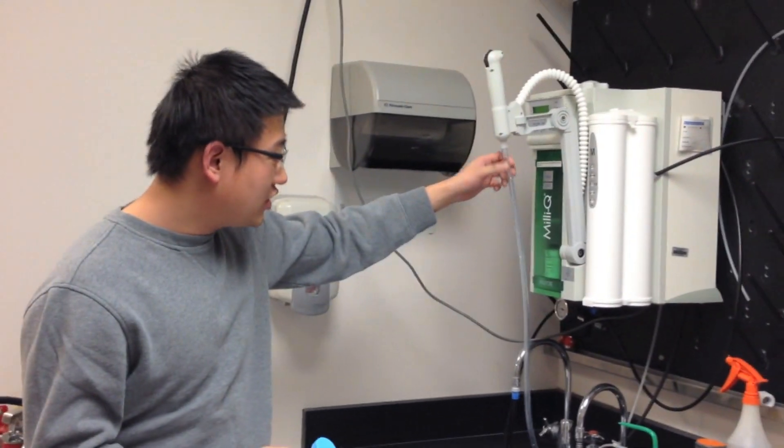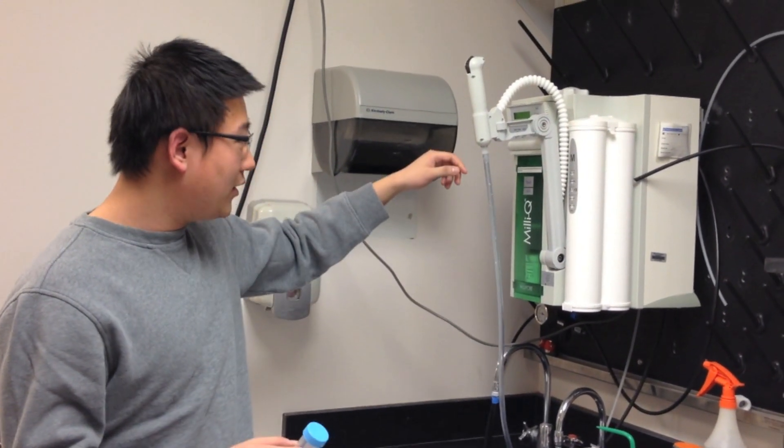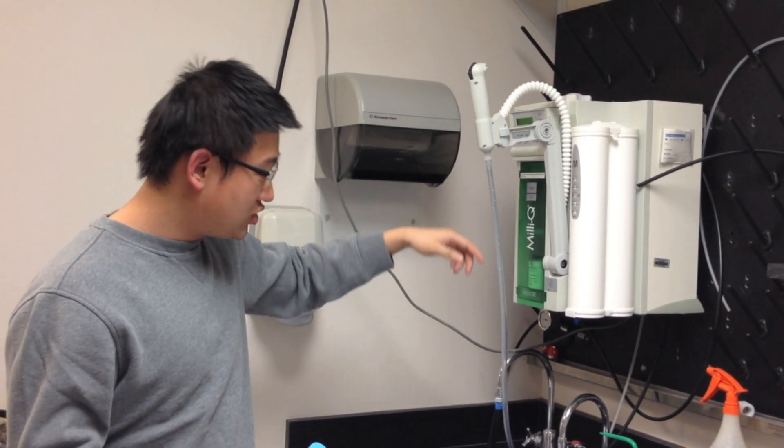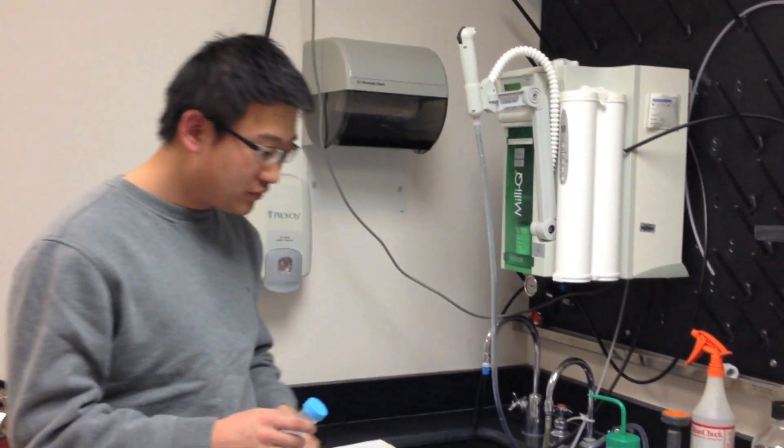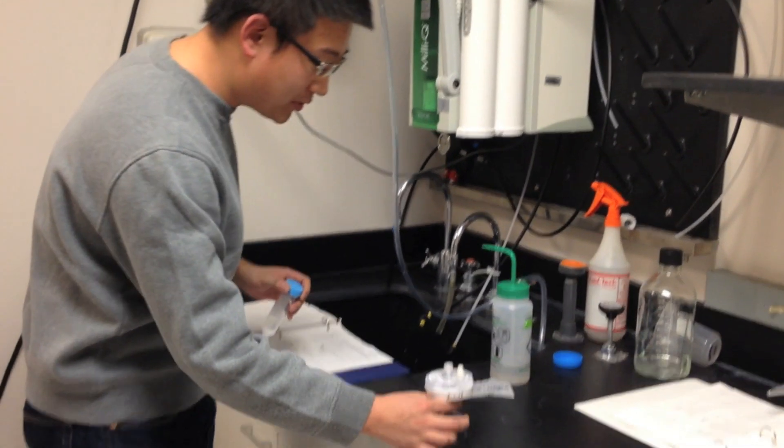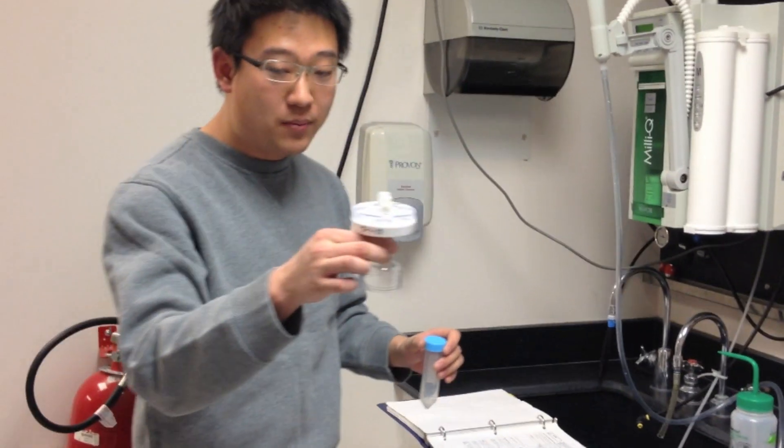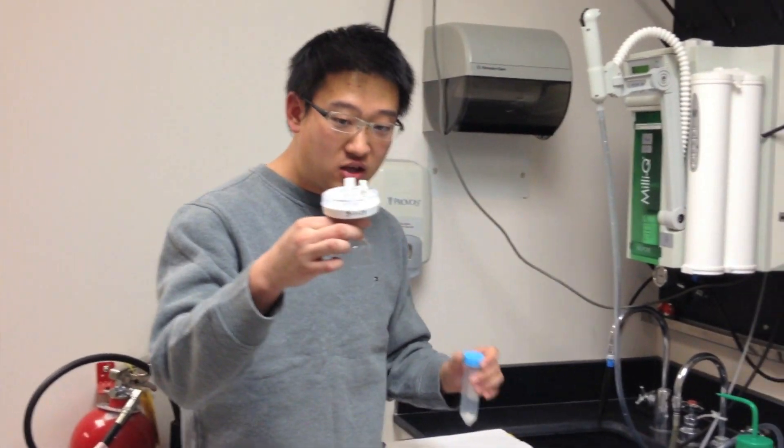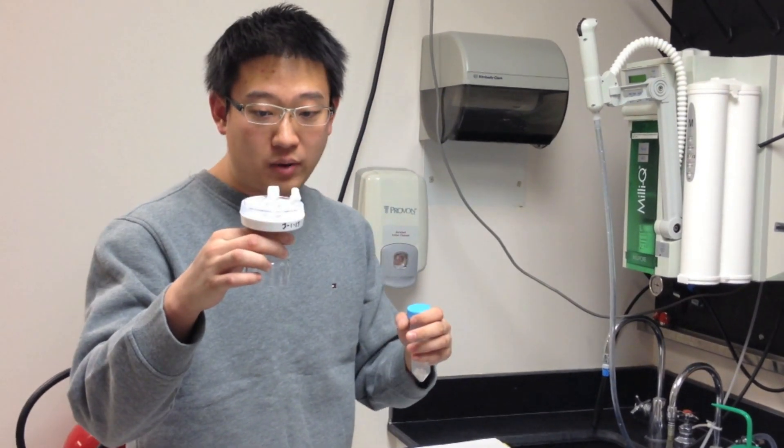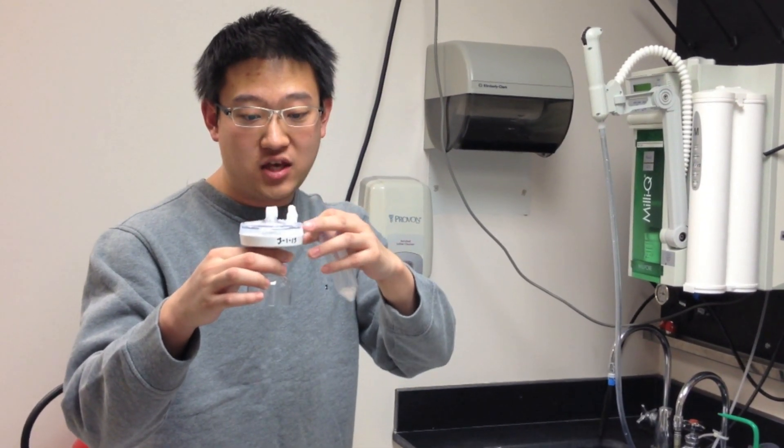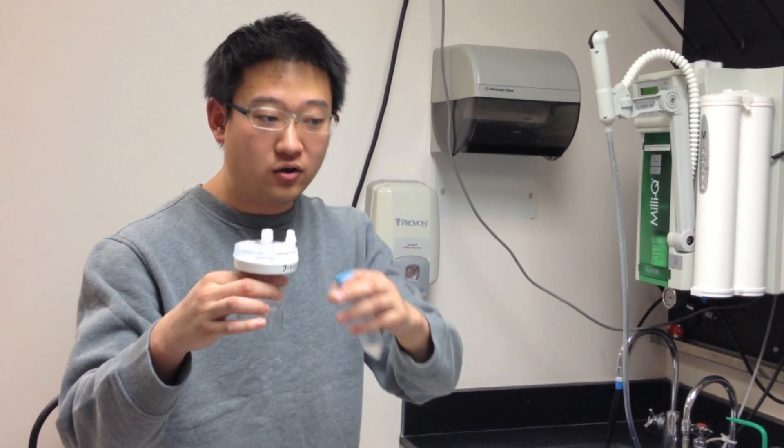You will need this Teflon tube to induce the sodium hydroxide water into the sink. So the first step is to take this mini-pack filter off, and then you need to parafilm. There are three openings. You need to parafilm to prevent the filter from drying out.